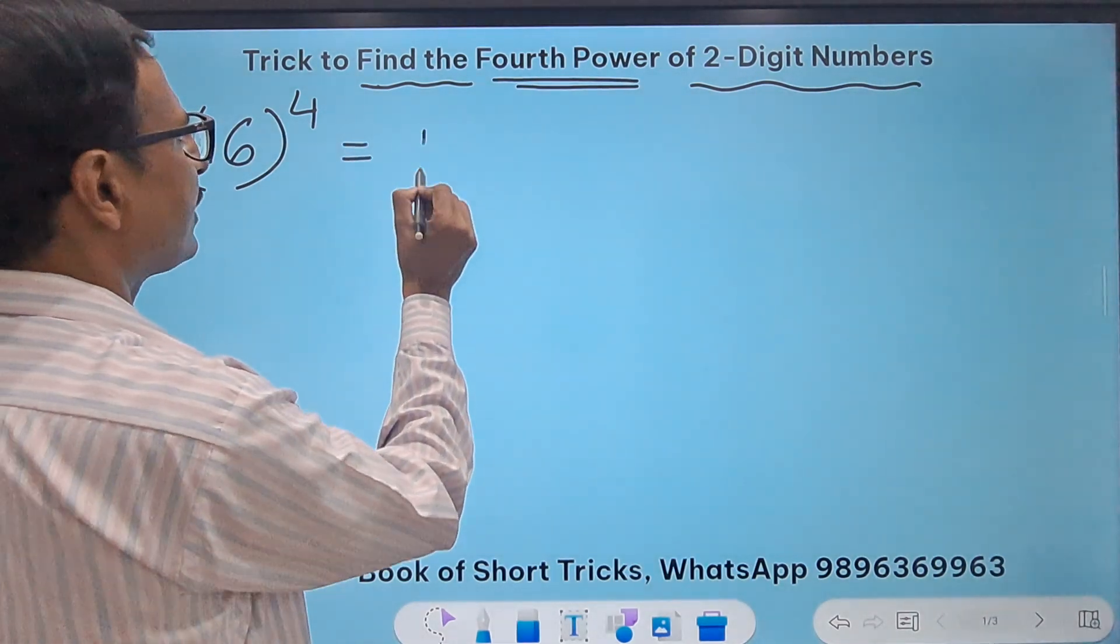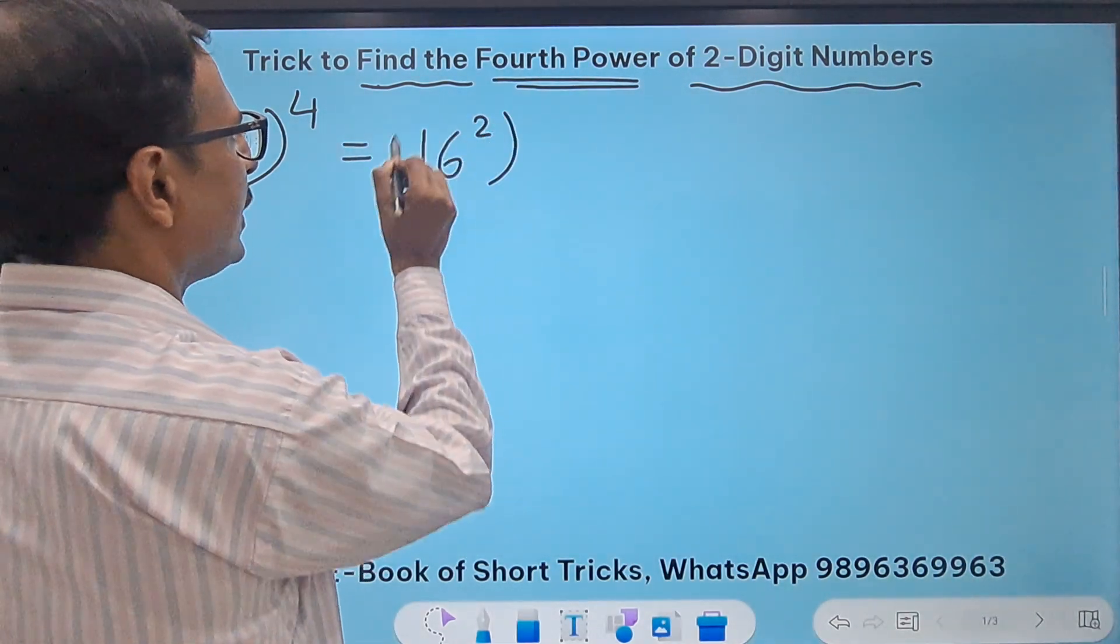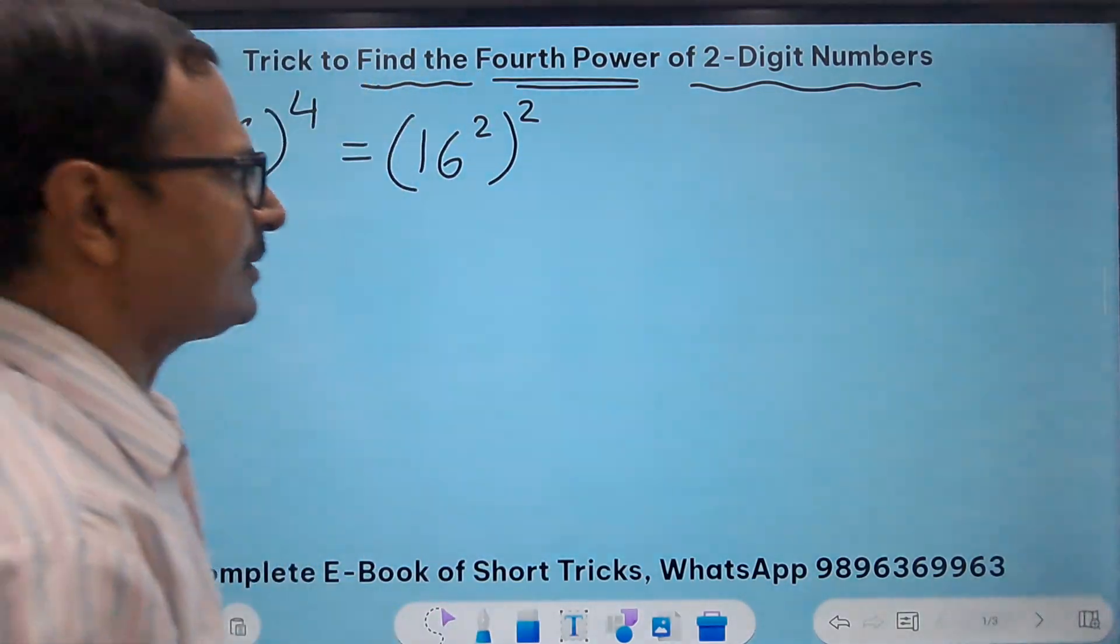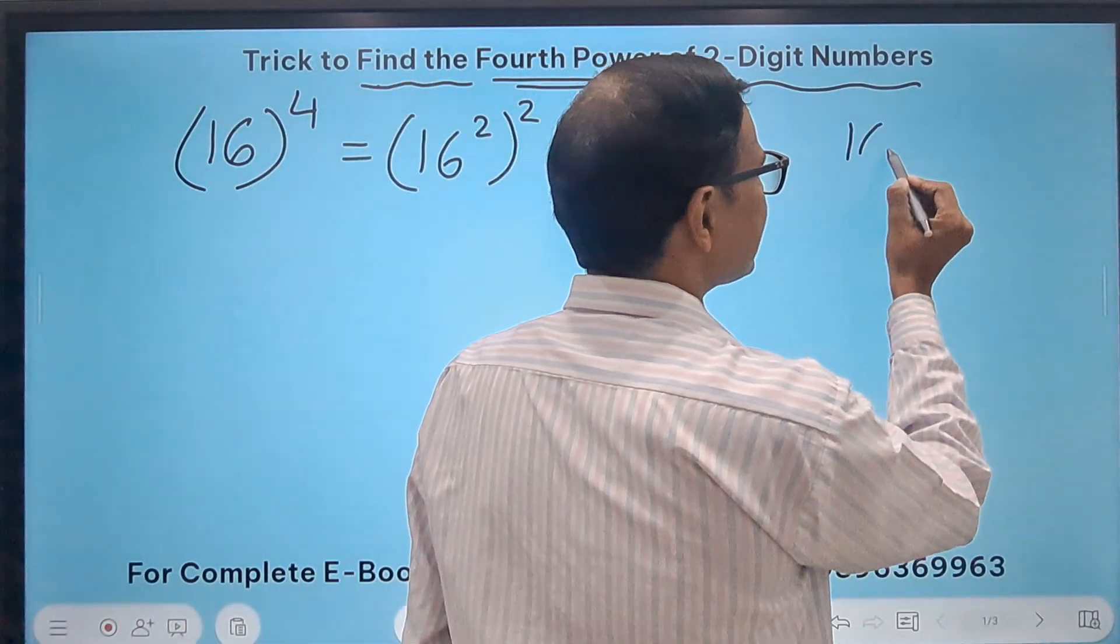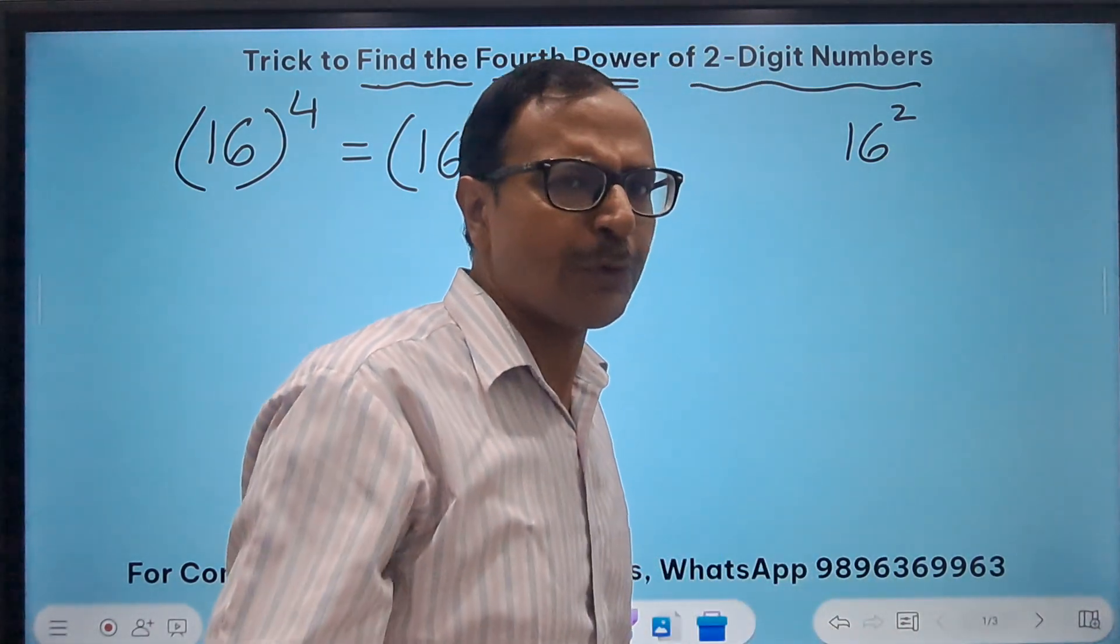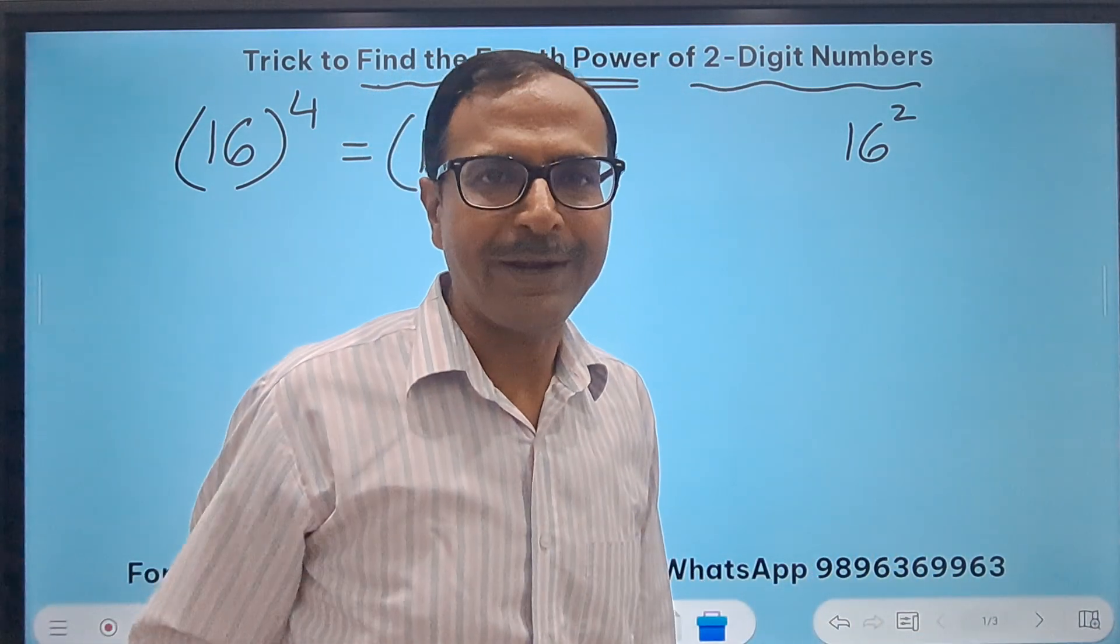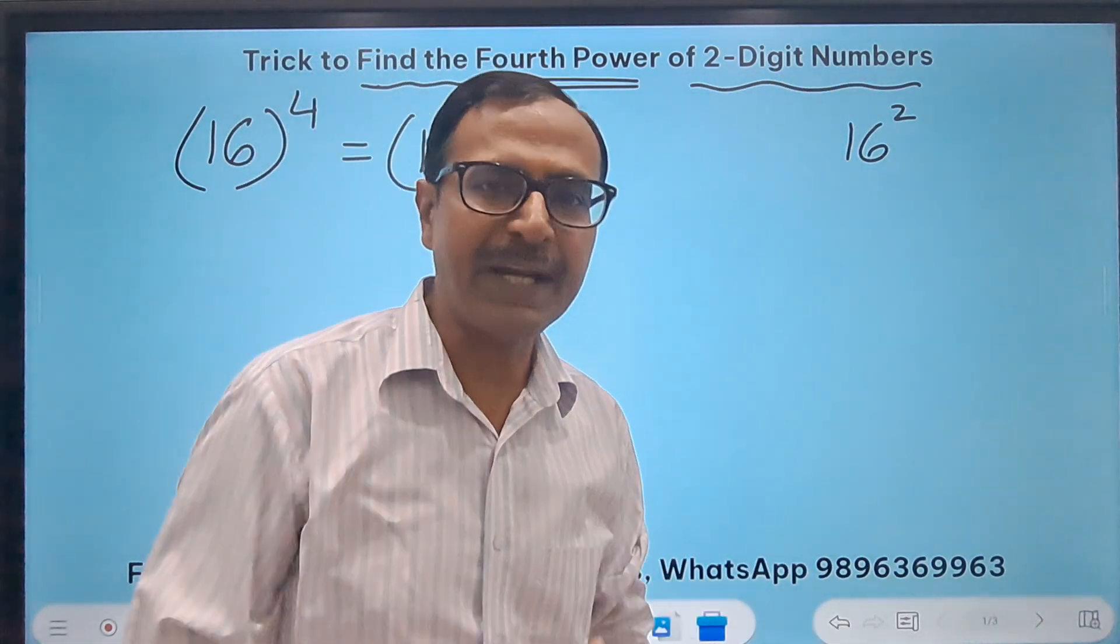So the number is 16. I need to do 16 raised to power 4. So I know that 16 raised to power 4 is 16 square squared, right? So the first thing is to get the square of 16. To find the square of 16, I think most of you already know that it is 256, right?